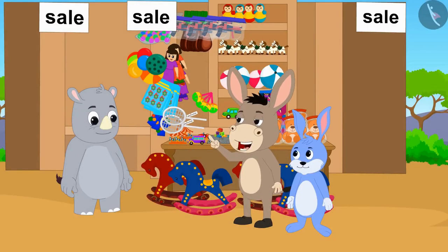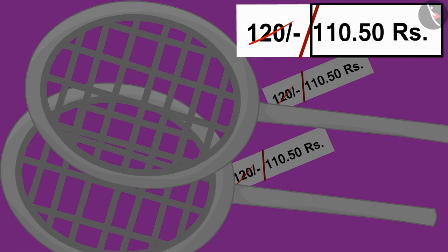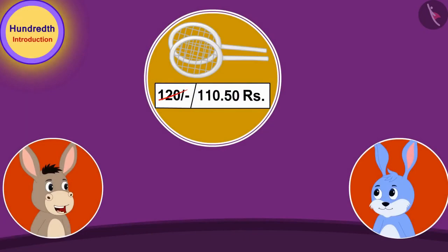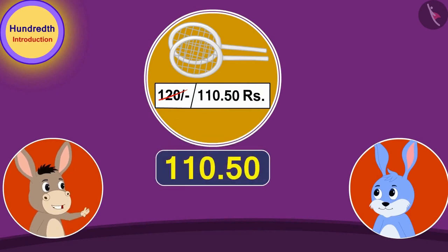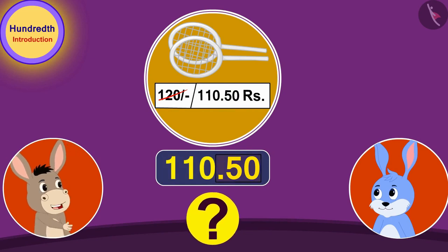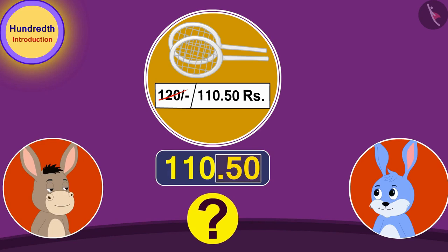Bhoala wants to buy a new badminton racket. The new price, 110.50 rupees, has been written on this badminton racket by striking out the old price. Bunny, what kind of a price is this? I understood 110 rupees, but how will we give this 0.50 rupees? Bhoala asked Bunny.